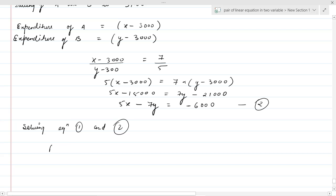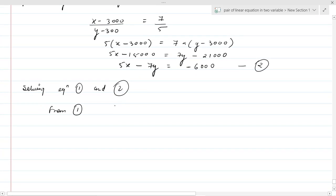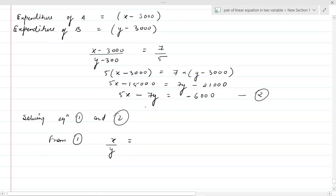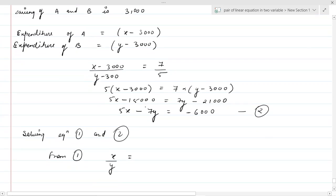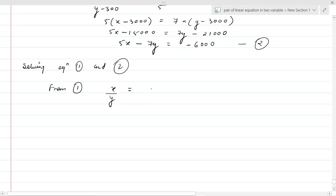From first, we have X upon Y equal to 5 upon 4. So Y equal to 4X upon 5. We will put this in equation second.